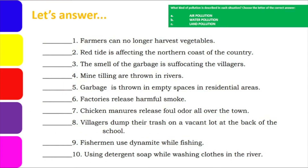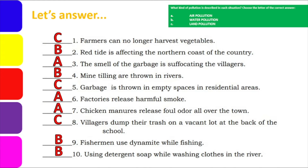Let's answer. The answers are: Number 1 — farmers can no longer harvest vegetables. Since farmers work on land, that's Letter C, land pollution. Number 2 — red tide is affecting the northern coast of the country. Coastal lines involve beaches where land and water meet, so Letter B, water pollution. Number 3 — the smell of garbage is suffocating the villagers. Smell and difficulty breathing means Letter A, air pollution. Number 4 — mine tailings are thrown in rivers. Mining waste going into rivers means water pollution, Letter B. Number 5 — garbage is thrown in an empty space in residential areas. Letter C, land pollution.